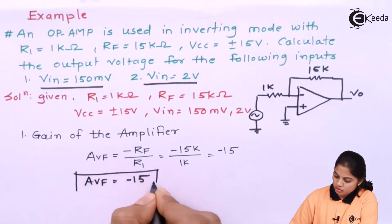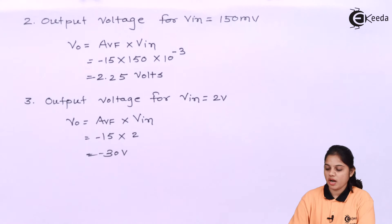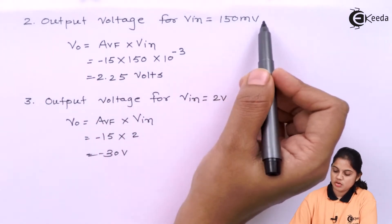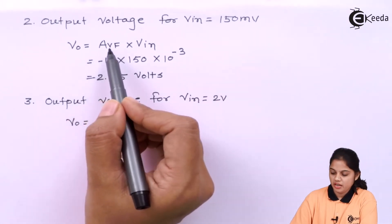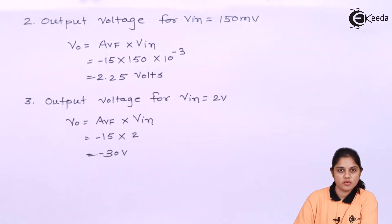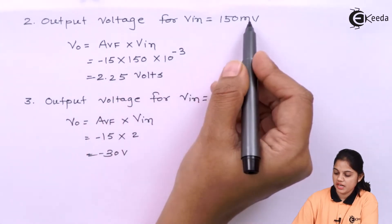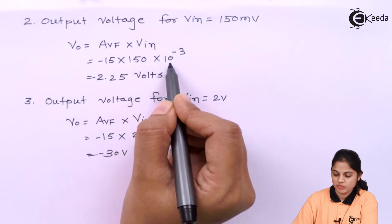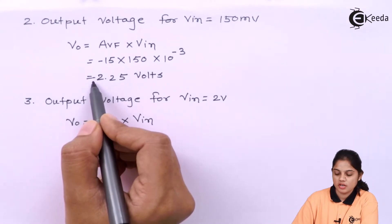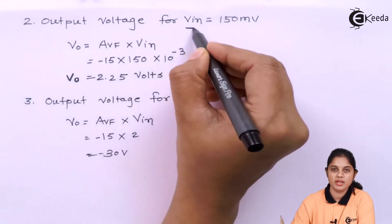So we have got the closed-loop gain of the amplifier. Now we can calculate the output voltage. For VIN equal to 150 millivolt, V0 is equal to closed-loop gain AVF into VIN. AVF is equal to minus 15, and VIN is 150 millivolt, that is 150 × 10⁻³. So if you calculate this value, V0 is equal to 2.25 volt. This is the output voltage of the inverting amplifier for the given input of 150 millivolt.